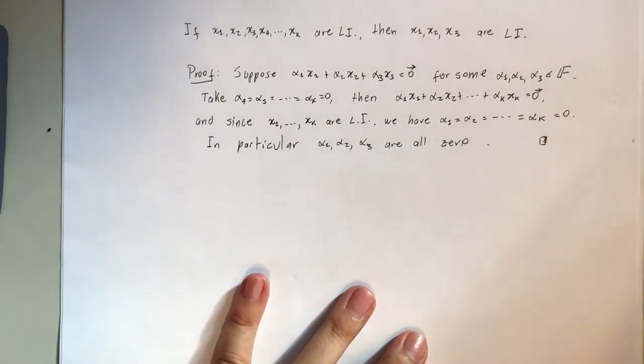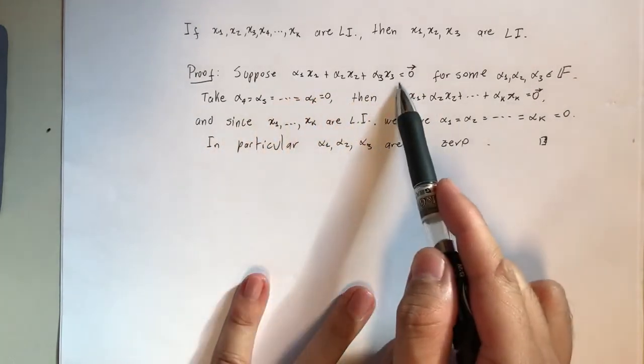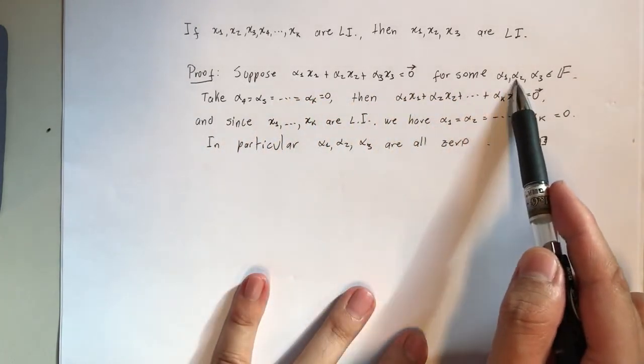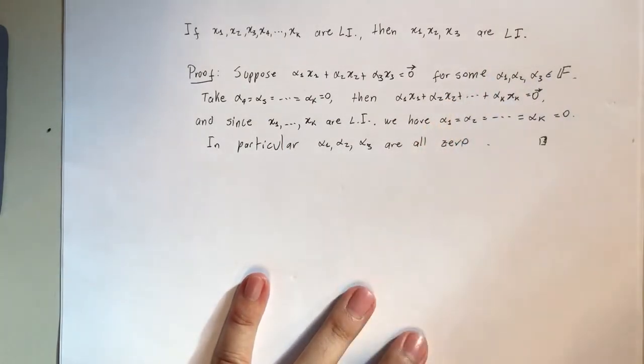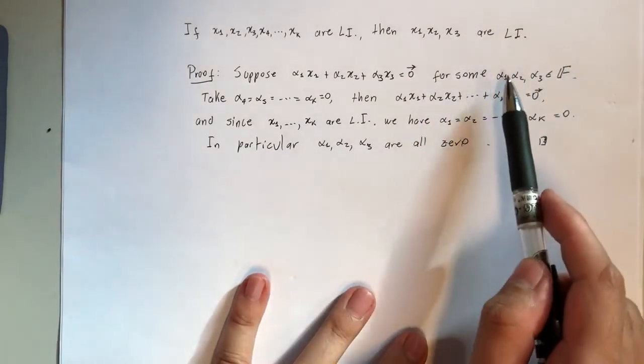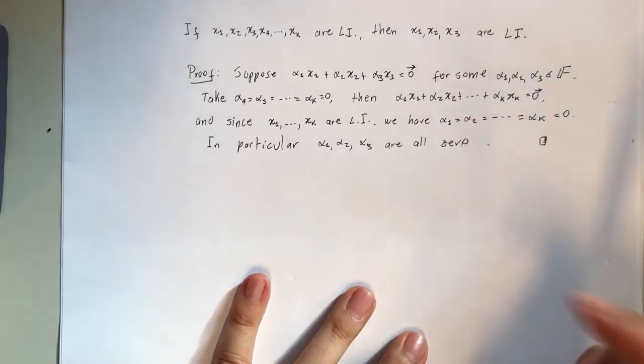So suppose this combination is zero for some numbers a₁, a₂, and a₃. 'Some' here is a logical quantifier - it means there exists α₁, α₂, α₃ for which this combination is zero.